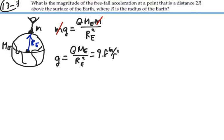You can verify this by actually putting in the values of G, the mass of the Earth, and the radius of the Earth, and you would find that it indeed comes out to 9.8 meters per second squared.